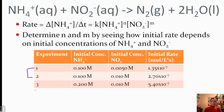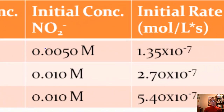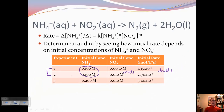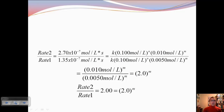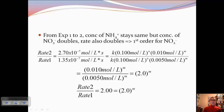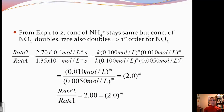Let's take a look at experiments 1 and 2. What you should notice is that the concentration of ammonium ion is not changing at all. Now look at the concentration of NO2 minus ion — from experiment 1 to 2, it looks like we're doubling. And if you look at our rate, we're also doubling. When the concentration doubled and the rate doubled, that is first order. The concentration of NH4 plus is the same, but our NO2 concentration doubles and the rate doubles — this means it's first order in NO2 minus.